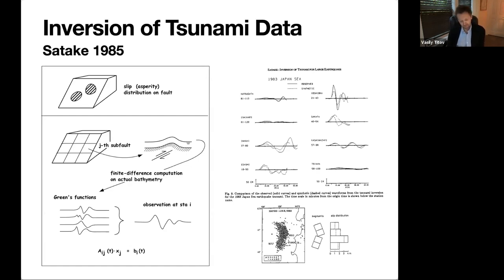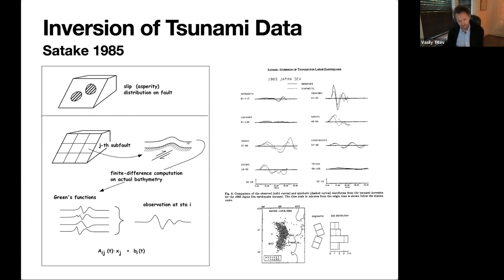The second problem is the data itself: tide gauges were all analog stations at the time, definitely not real-time. But the main issue is that tide gauges are usually placed deep inside harbors — to shield the instrument from wind waves — which is the worst place to measure tsunami. Harbors are enclosed bodies of water that resonate at their own frequency, acting like a filter embedded in every time series you try to invert.